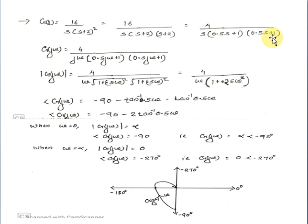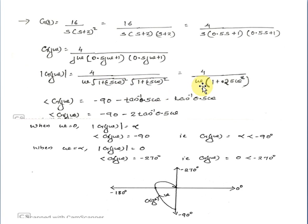Substituting s equal to jω to get G(jω). The magnitude of G(jω) equals 4 by [ω into root(1 + (0.5ω)²) into root(1 + (0.5ω)²)], which simplifies to 4 by [ω into (1 + 0.5ω²)]. The angle of G(jω) is minus 90 minus 2·tan⁻¹(0.5ω).